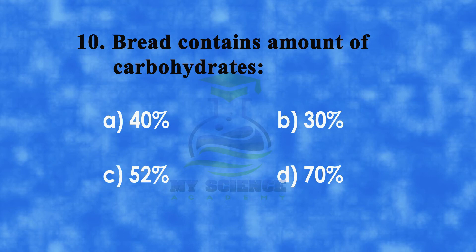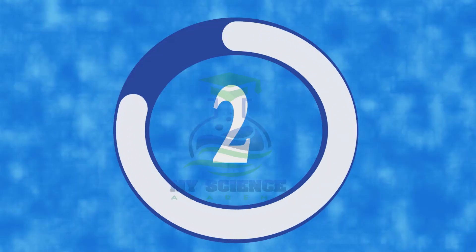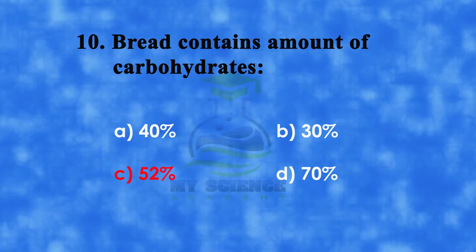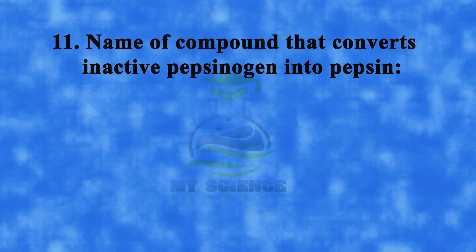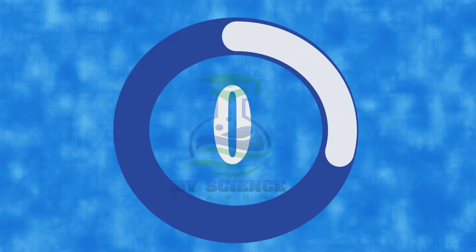Question number ten: the correct option is c) 52%. Question number eleven: the name of the compound that converts inactive pepsinogen into pepsin is — a) H₂SO₄, b) HCl, c) mucus, or d) lipase.